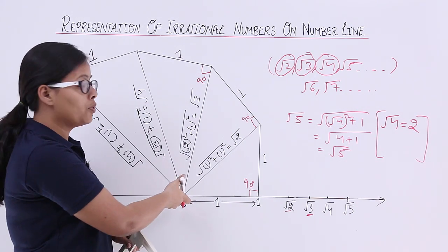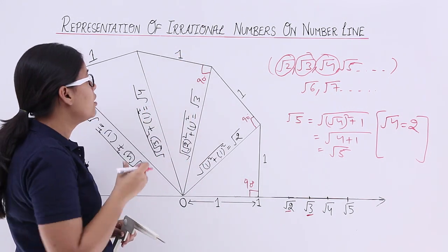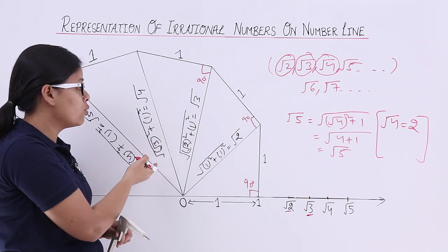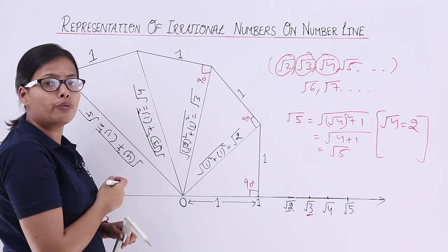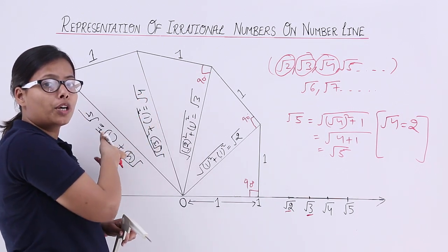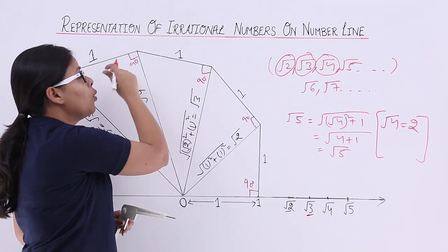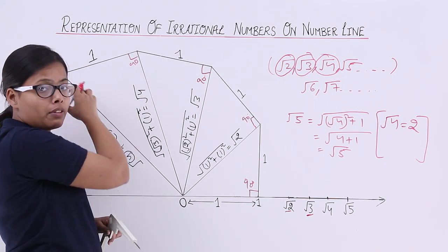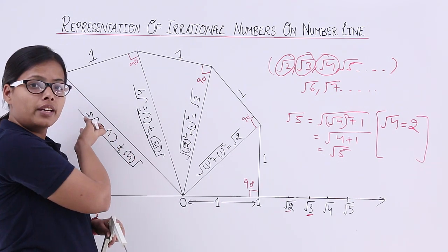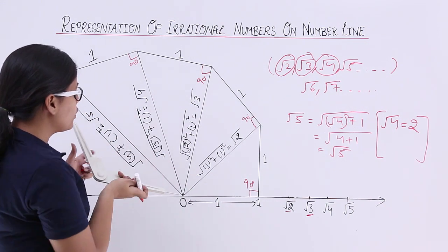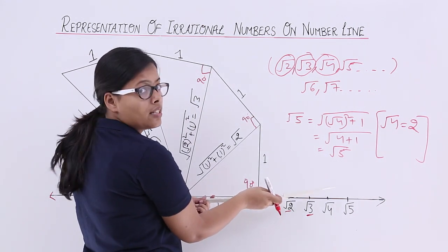I have drawn √4 by using √3 as the base and 1 as the height. Using the Pythagorean theorem: (√3)² + 1² = √4. Then, with √4 as the base and taking a perpendicular of length 1 again, the hypotenuse gives us: (√4)² + 1² = √5. Now open the compass to the length of √5 and mark √5 on the number line.